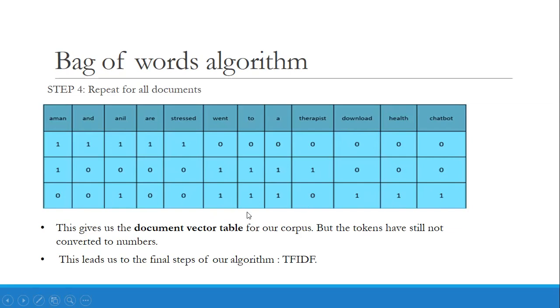This gives us the document vector table for our corpus. But the tokens have still not been converted to numbers. For that process, we need to implement the final step of our algorithm, which is TF-IDF. Hope you understood clearly how we create a document vector table.